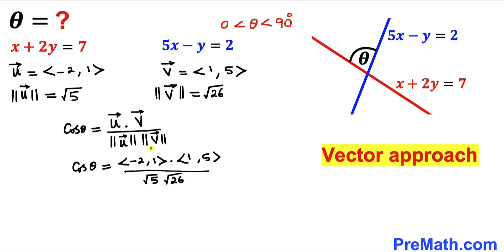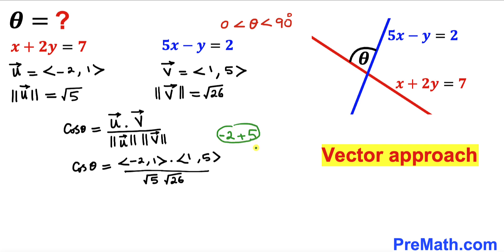Now let's multiply these two vectors by their corresponding values: negative 2 times 1 gives us negative 2, plus 1 times 5 gives us 5. Simplifying, negative 2 plus 5 gives us positive 3. So therefore the dot product of these two vectors turns out to be equal to positive 3.